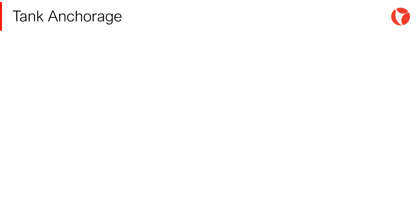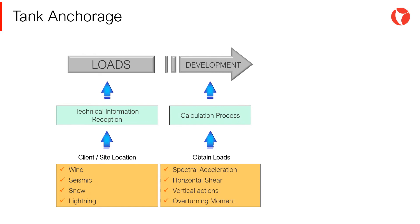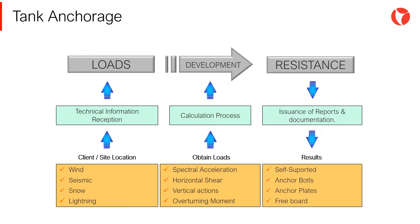As with almost any static calculation, the method of calculating anchor bolts can be summarized as follows. First, all the loads acting on the tank are defined. Then, the parameters of the calculation are determined according to the calculation process. And finally, the resistance of the system is obtained and the anchor bolts are designed.